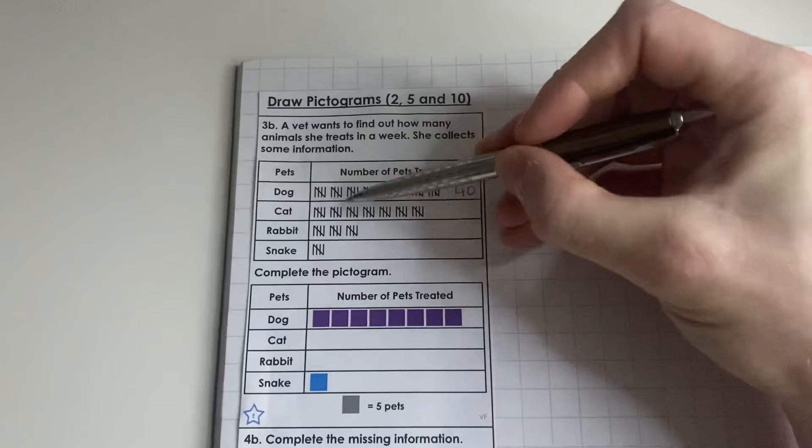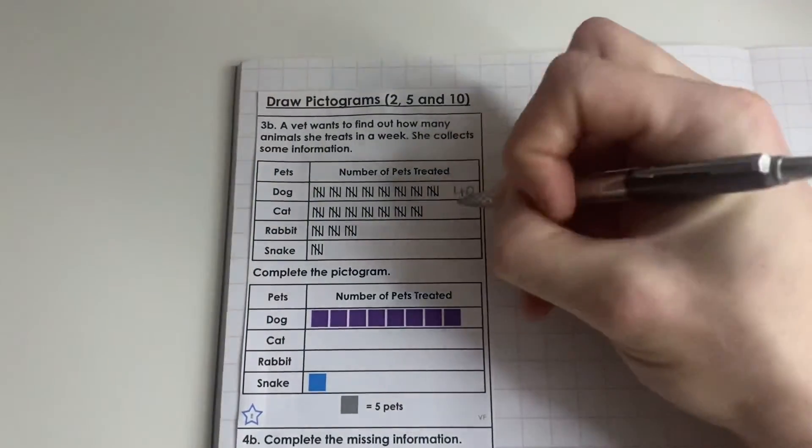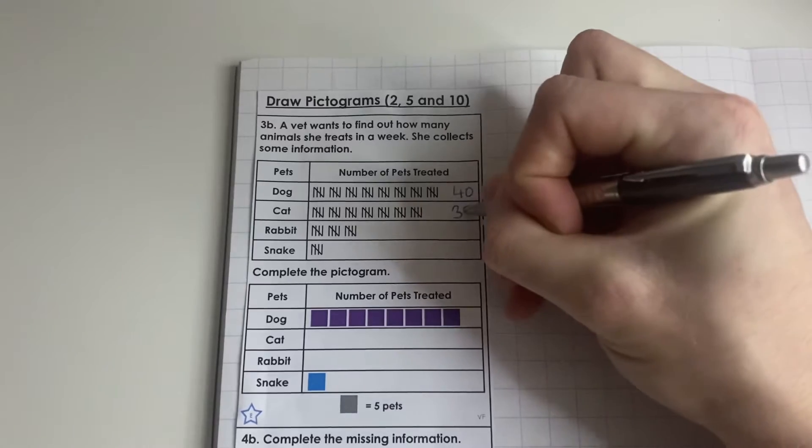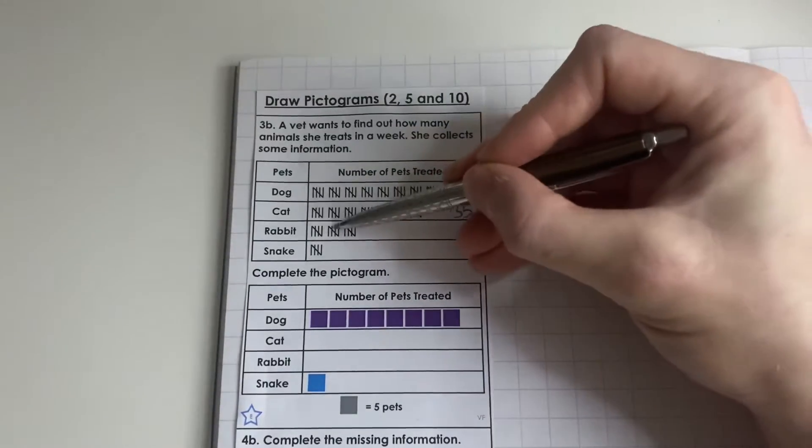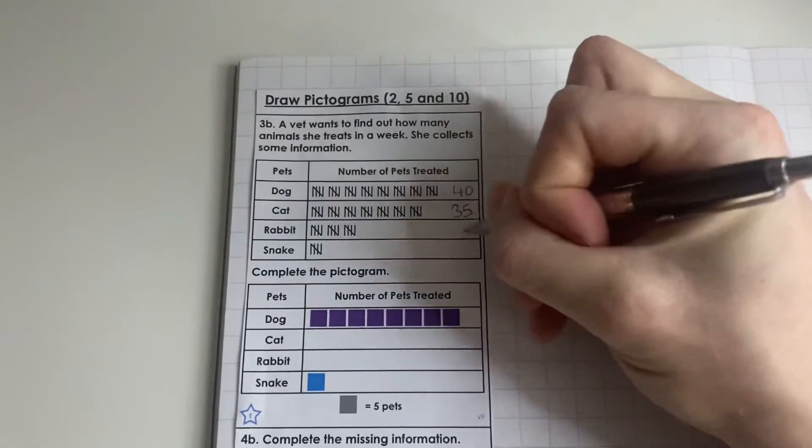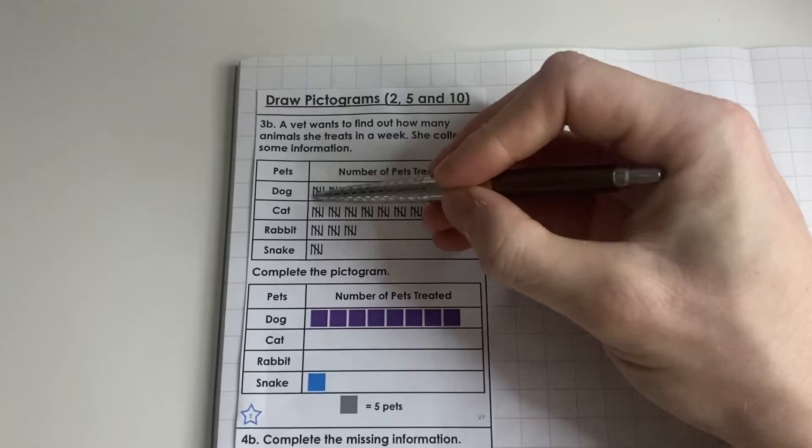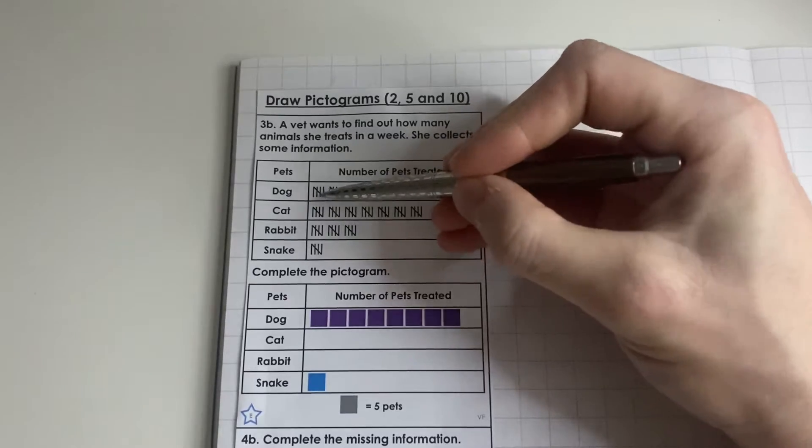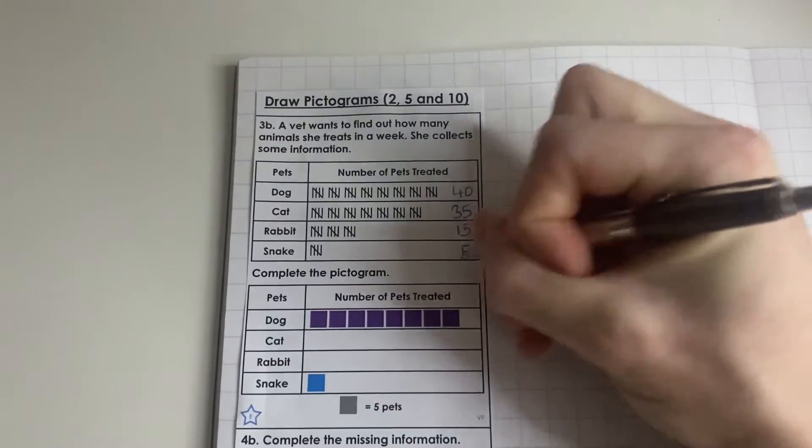Cat: 5, 10, 15, 20, 25, 30, 35. Rabbit: 5, 10, 15. Remember we're counting up in fives because each one of these is worth five, the gate is worth five. And then we've got one, not five there, so there were 5 snakes.